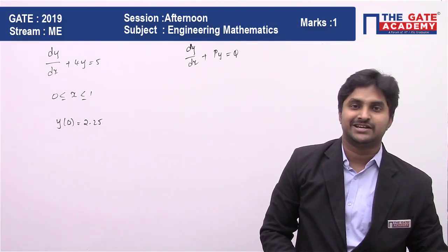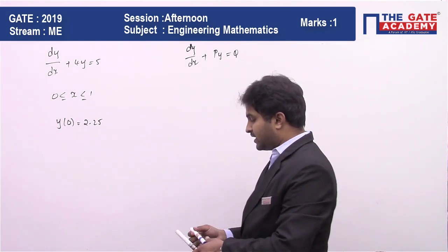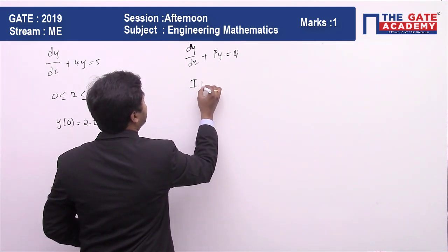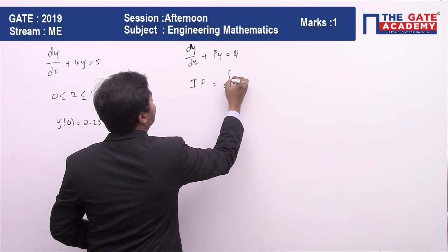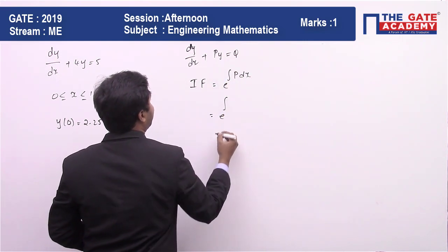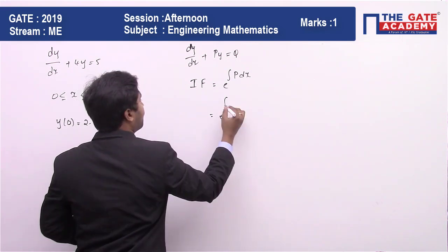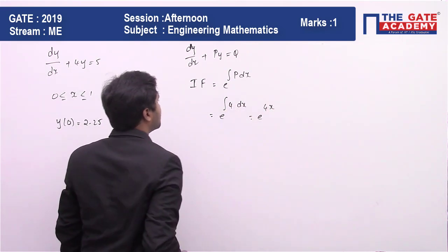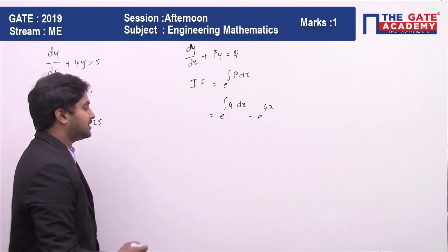The integration factor is going to be equal to e^(∫p dx). So it is going to be e^(∫4 dx), which is equal to e^(4x). So once we get the integration factor, then the solution is going to be: y multiplied by integration factor = ∫(integration factor × q) dx.